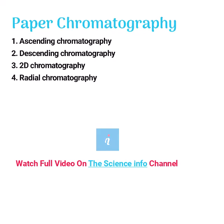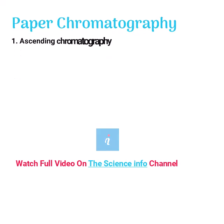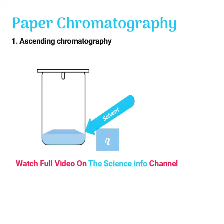In ascending chromatography, solvent is stored at the bottom of the chamber. A tiny part of the filter paper is dipped into the solvent. The solvent then starts flowing upward due to capillary action.